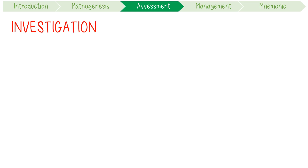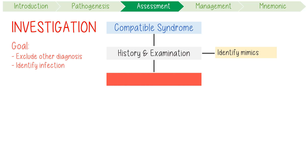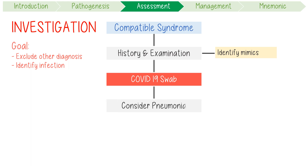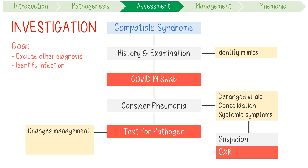When investigating acute bronchitis, the goal is to exclude other diagnoses and identify underlying infective agents if this will change management. Consider this approach in a patient who has a compatible syndrome: perform a history and examination to identify other mimics like heart failure, reflux, or an ACE inhibitor cough. Perform a COVID-19 swab if possible. Consider pneumonia as a diagnosis if a patient has deranged vitals, clinical signs of consolidation, or significant systemic symptoms. If you have a suspicion for pneumonia, perform a chest x-ray and other appropriate investigations. If not, consider testing for pathogens that would change management — for example, influenza swabs or a swab for pertussis. A chest x-ray is not indicated for a patient with acute bronchitis, but if pneumonia is suspected, use the chest x-ray to confirm the diagnosis.